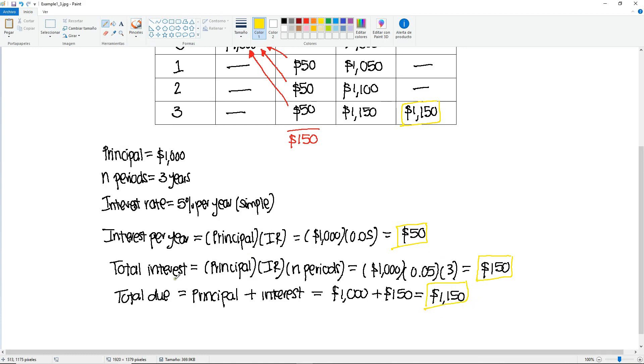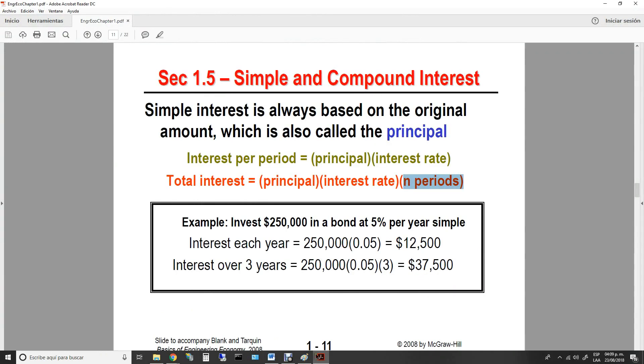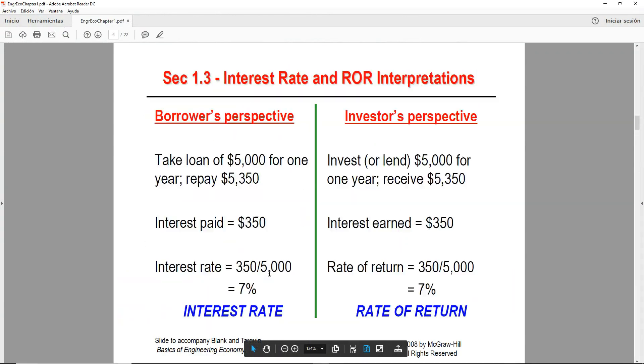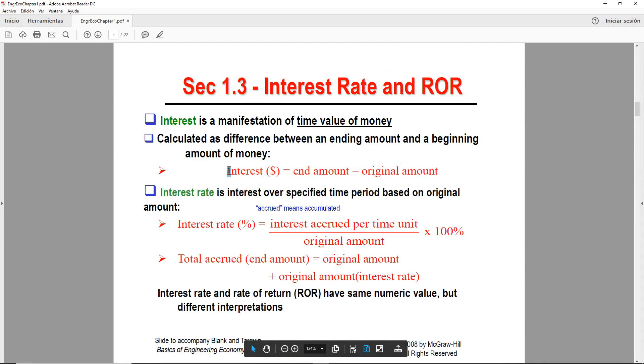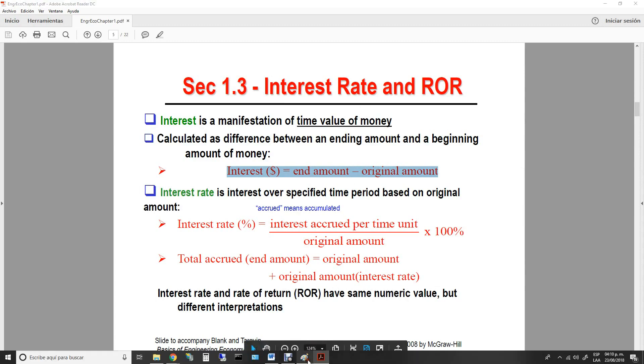Now, where is this coming from, the last formula? How do you know that the total due is the principal plus the interest? So if you go back to the very beginning, we have this formula right here. The interest in terms of money is equal to the end amount minus the original amount. And that's exactly what we have here.